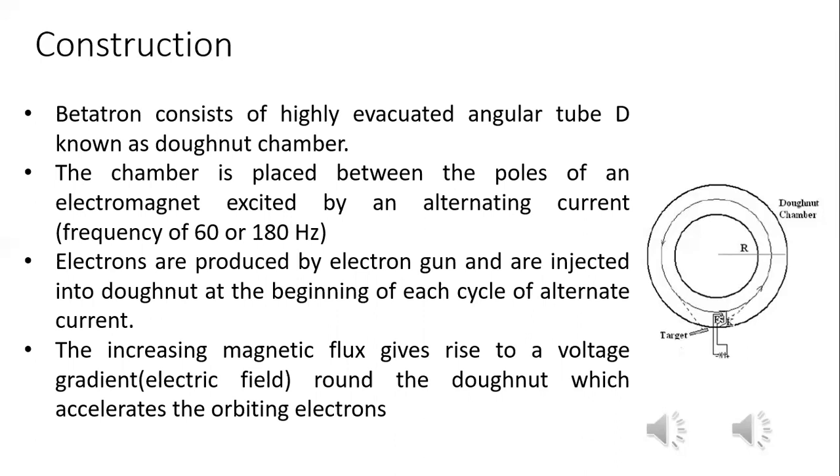The increase in the magnetic field gives rise to a voltage gradient around the doughnut which accelerates the orbiting electron. When the alternating current increases the magnetic field, the magnetic field affects and accelerates the particle, providing sufficient energy for the electron.